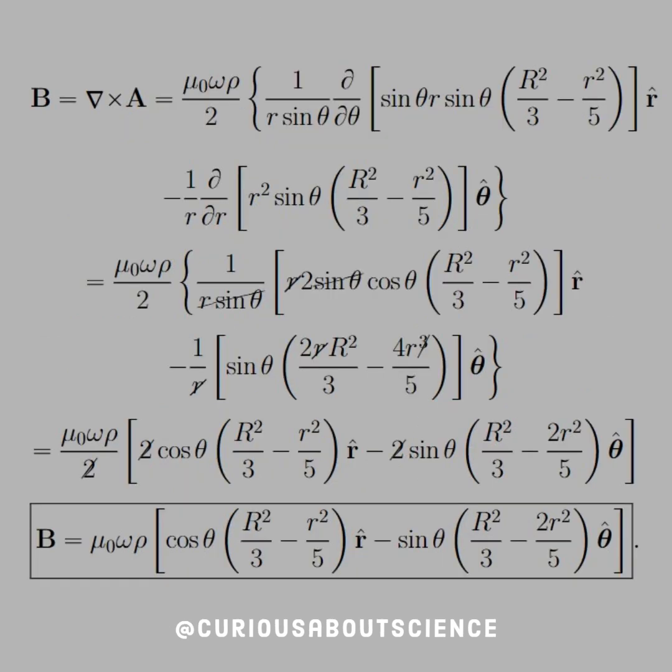Further, we need to take the curl of this potential in order to show what the magnetic field is. So you notice that we're in spherical coordinates. We need a spherical curl, which come with some multipliers like sine theta and one over r sine theta, things of that nature. So just be careful when you're applying this.